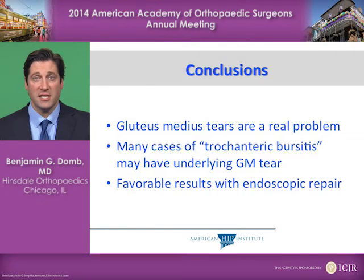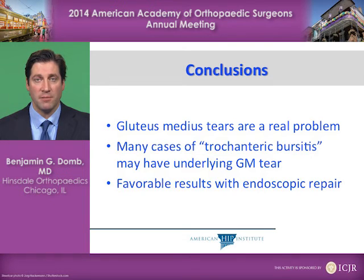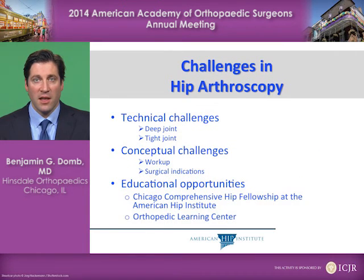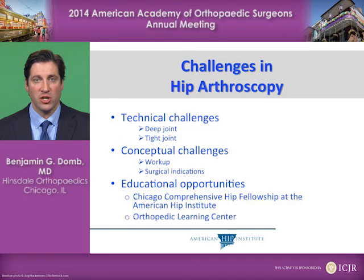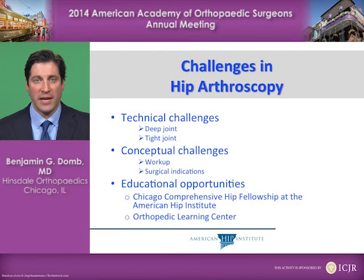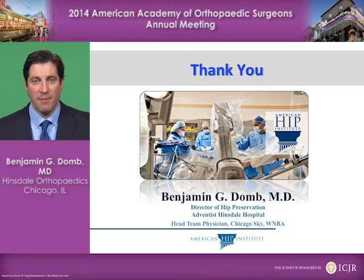In conclusion, gluteus medius tendon tears are a real problem. Many cases of trochanteric bursitis may have an underlying gluteus medius tear, and favorable results have been achieved with endoscopic repair. There are many challenges involved — the hip is a deep and tight joint, and conceptual challenges include the workup and surgical indications. Educational opportunities in this field are of great value. The Chicago Comprehensive Hip Fellowship at the American Hip Institute has been a resource for those who have trained, and the Orthopedic Learning Center and other centers provide regular courses of great value as well. Thank you very much — I'm Benjamin Dohm.